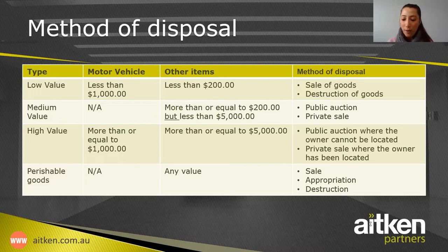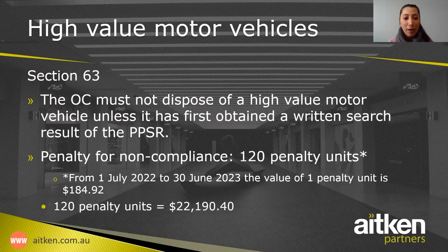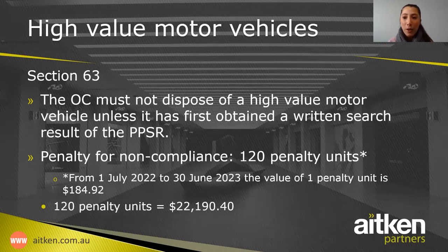The penalty for non-compliance with the PPSR requirement is 120 penalty units. Currently, the value of one penalty unit is $184.92, so 120 penalty units is $22,190.40. It is very important that the owner's corporation complies with Section 63, because there could be a significant penalty to be paid.